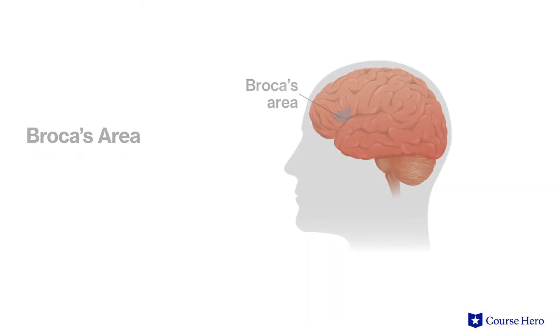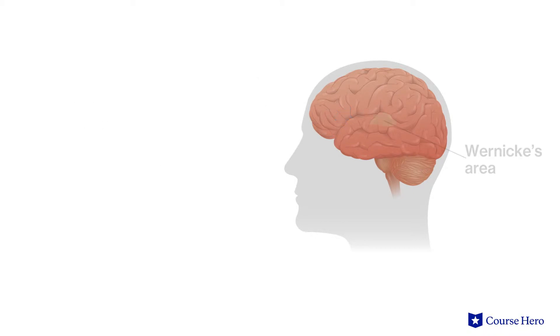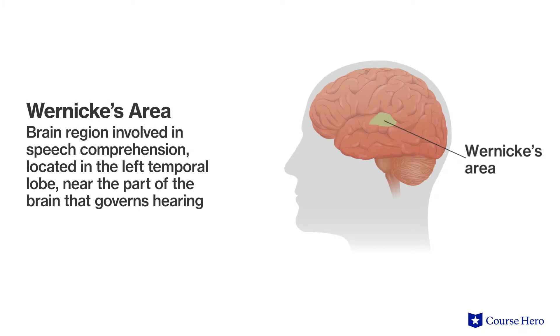What we do know is that language processing units are distributed in the brain. For example, Broca's area, which is located in the left frontal lobe near the areas of the brain that govern movement, aids in the production of speech. Wernicke's area, located in the left temporal lobe near the auditory cortex, focuses on speech comprehension.